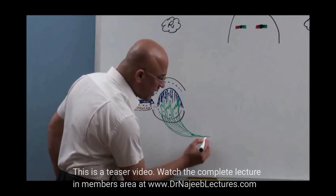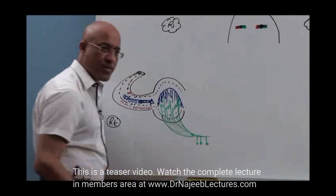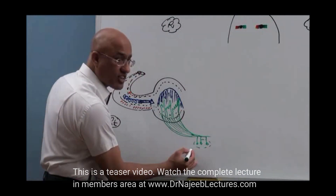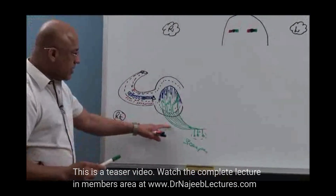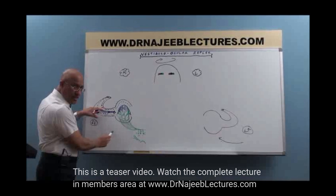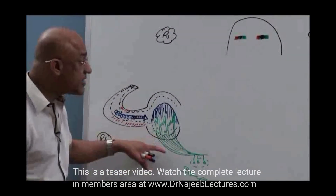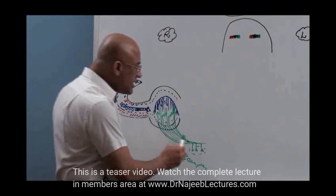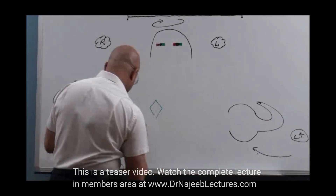The vestibular nerve neurons have a peripheral process connected with the hair cells and a central process going to the vestibular nuclei in the brain stem. This ganglion is called Scarpa's ganglion. So when you move the head and rotate it rightward, the endolymph in the right canal moves leftward, producing ampullopetal movement, depolarizing the hair cells, increasing the frequency of action potentials in the right vestibular nerve. These fibers go to the right vestibular nuclear complex.